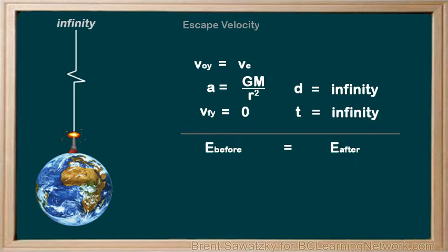Before, when the object is just shot off, we have kinetic energy. Since the object has velocity, that is escape velocity. And we have potential energy. It's relative to infinity, the place we're heading.